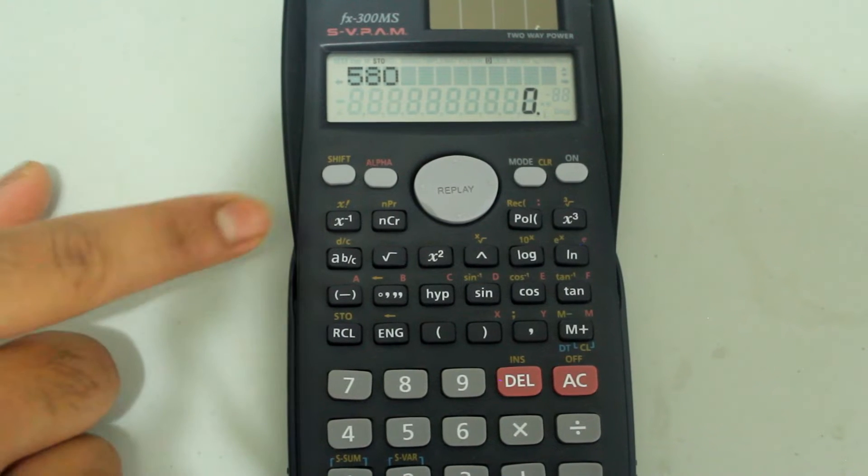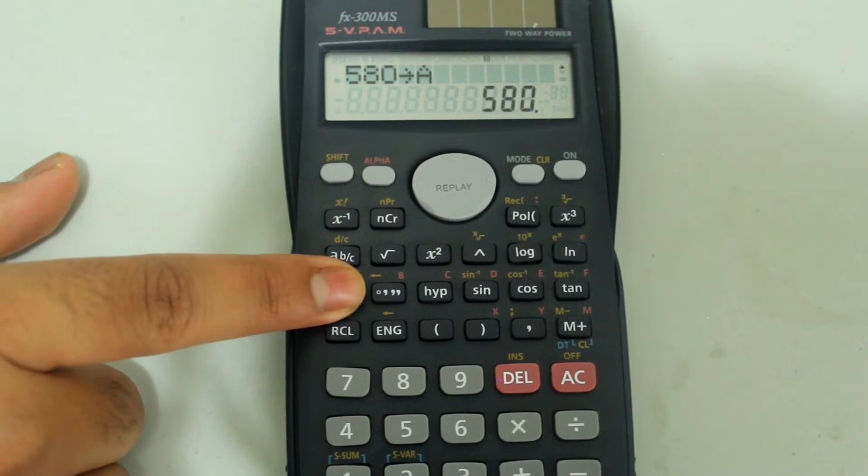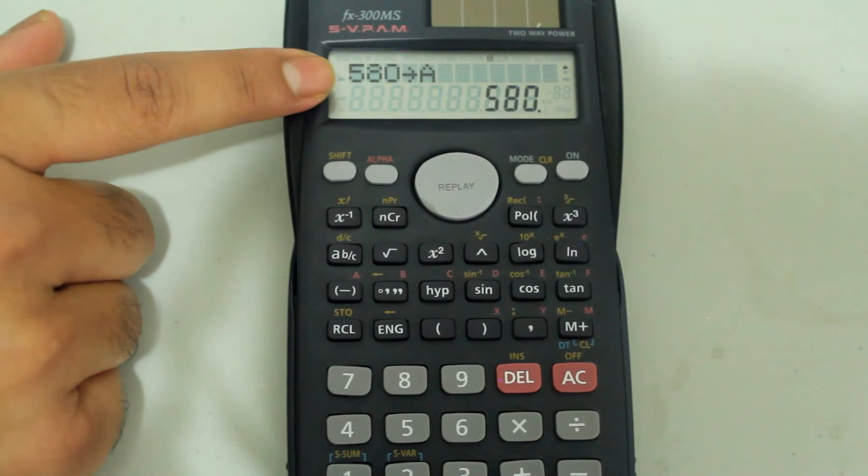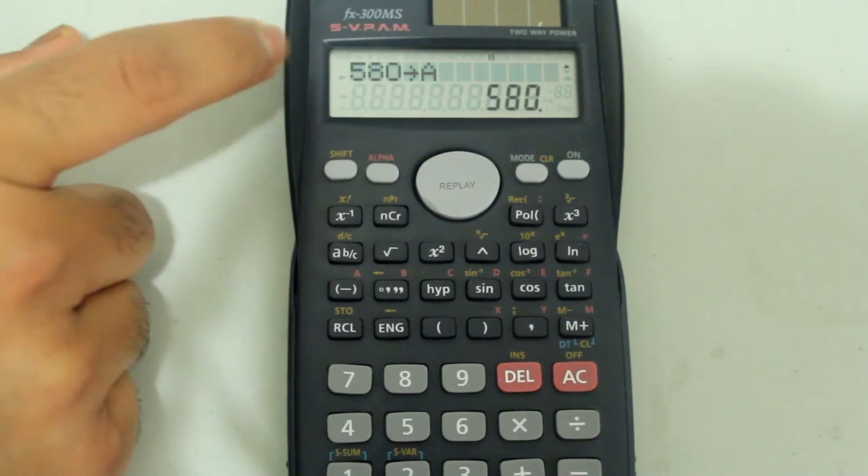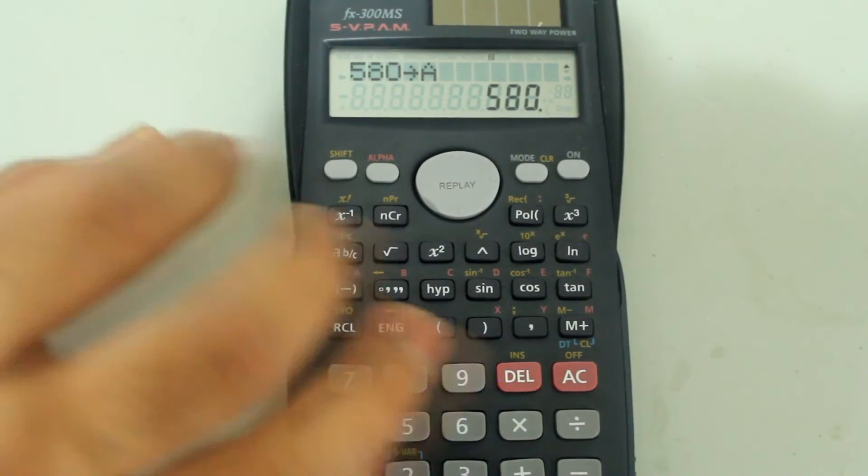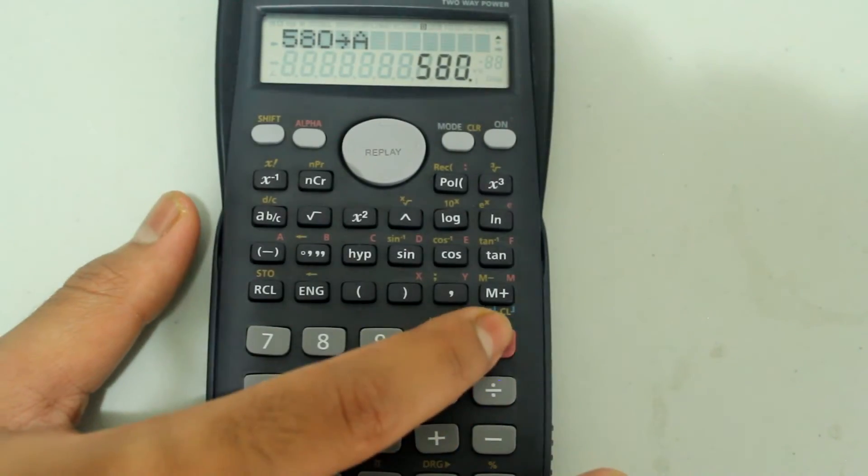Just press the button associated with the letter A, which is the negative sign. Now you see that 580 has an arrow to A. That means 580 equals A right now. Then I'm going to hit equals and clear this out.